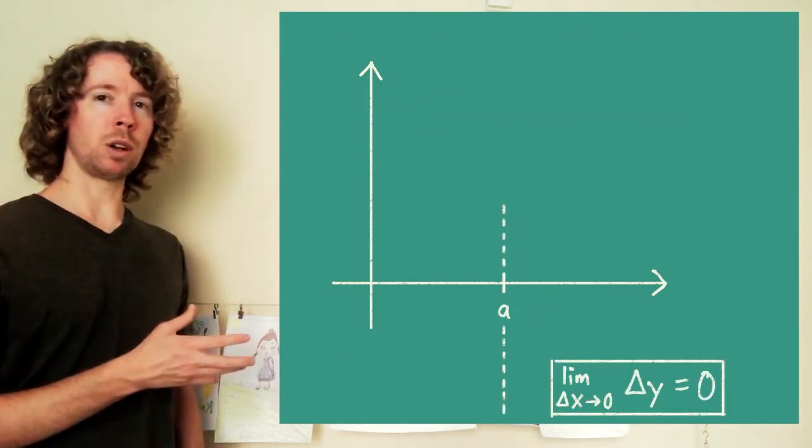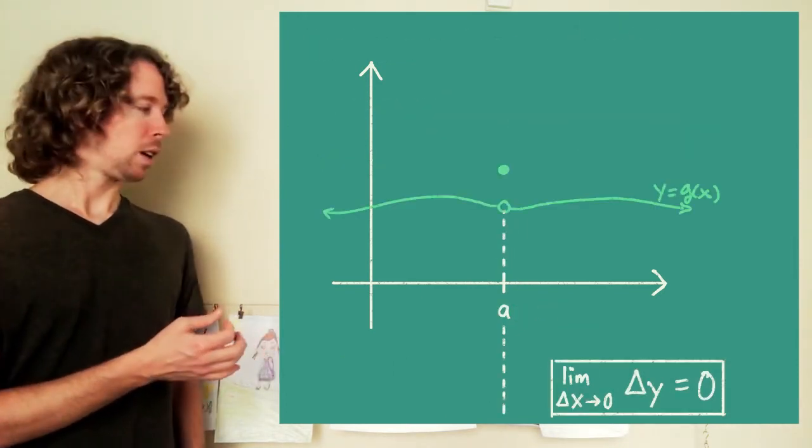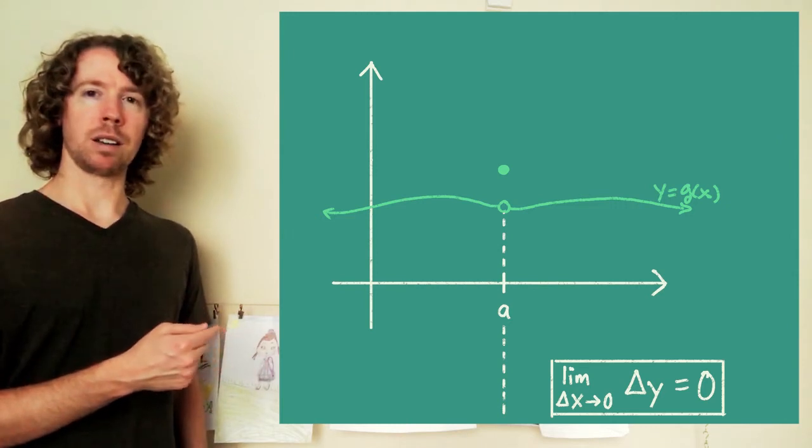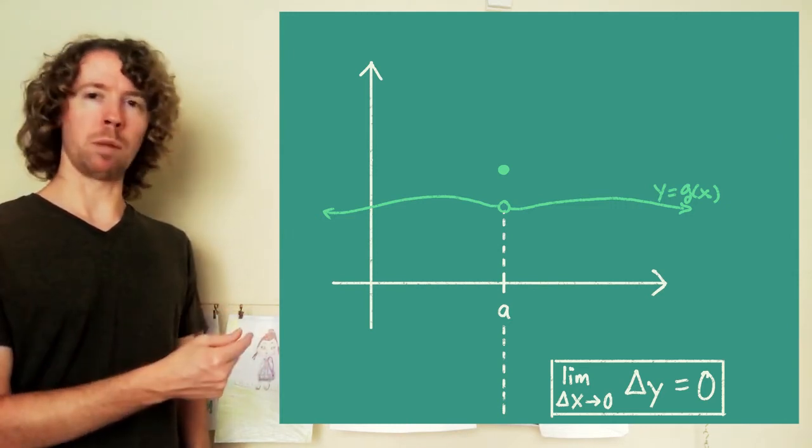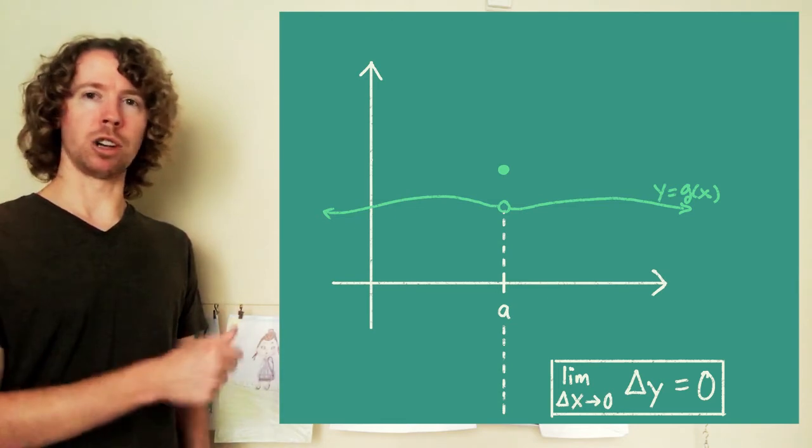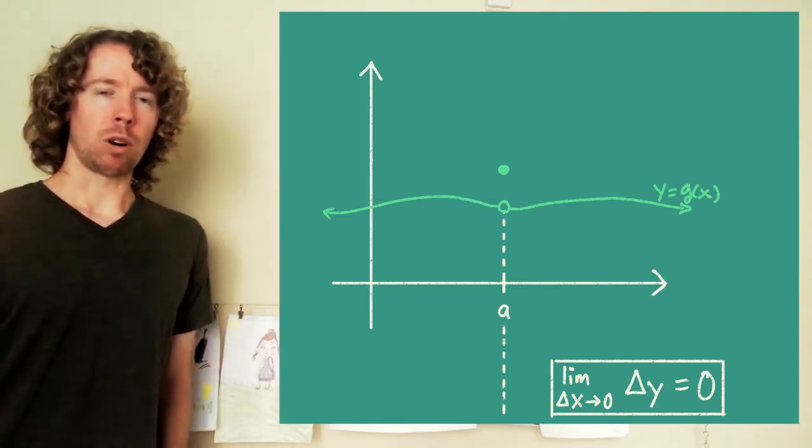So first, this little discontinuity where you just got a hole in the graph and the function is defined kind of randomly at this one point, the y value just jumps where you have a hole in the graph.